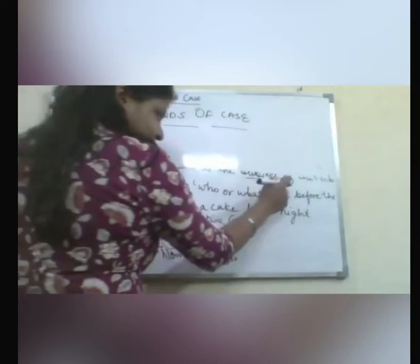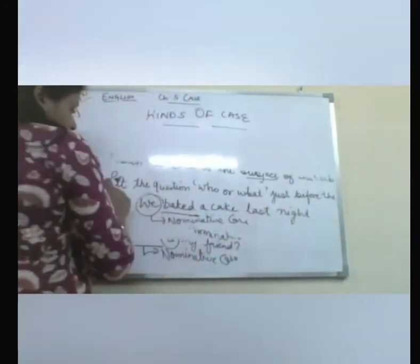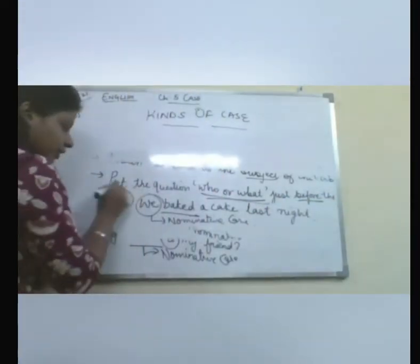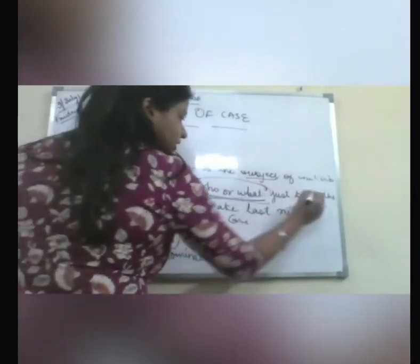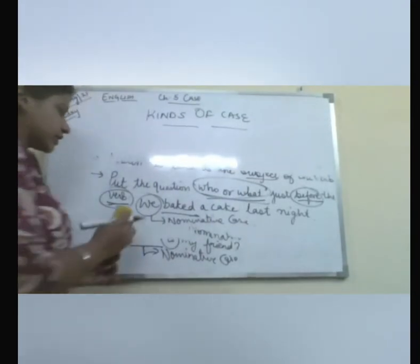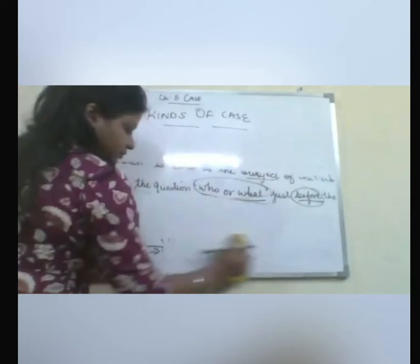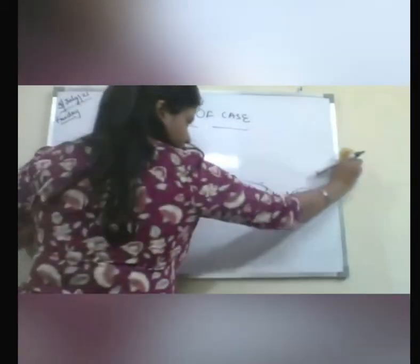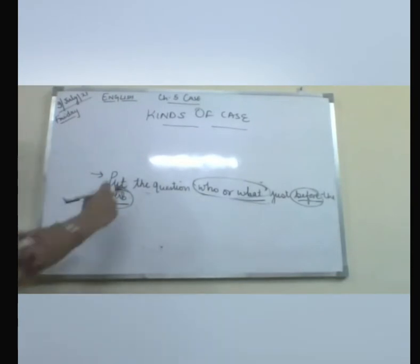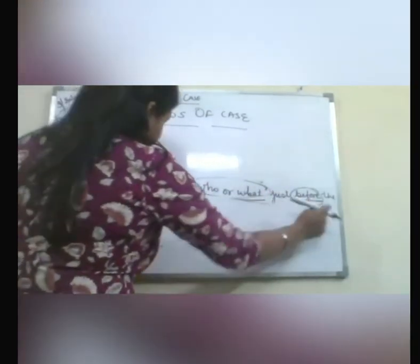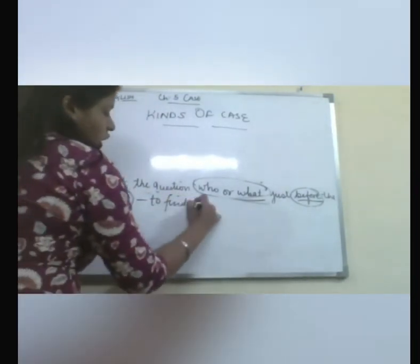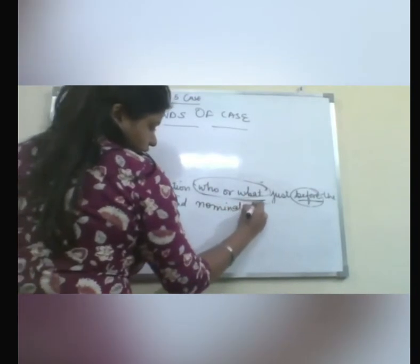So to summarize the nominative case: the noun is used as the subject, and the trick is to put the question 'who or what' just before the verb. The answer you get is the nominative case. Keep this point in mind.